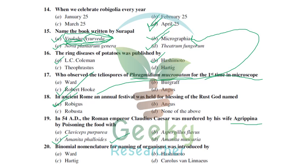Binomial nomenclature was introduced by Carolus Linnaeus. Every organism has two names: a genus name and a species name. Carolus Linnaeus is considered the father of taxonomy. He wrote 'Systema Naturae' in 1735 and 'Species Plantarum' in 1753. Linnaeus also trained two important students: C.H. Persoon and E.M. Fries, who will be discussed in later slides.